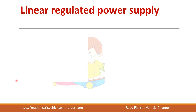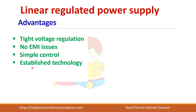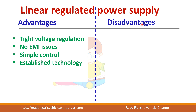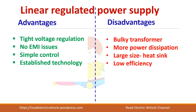Let us see the advantages and disadvantages of the linear regulated power supply. It has good voltage regulation — for changes in load and supply voltage variations it can give a good regulated output. There are no EMI issues because it operates at a very low frequency of 50 hertz, and it has simple control and is an established technology. The disadvantages are: a very bulky transformer due to the 50 hertz operation, the transistor operates in the active region so power dissipation is more, you need a large heat sink, and the efficiency of the system is very low.